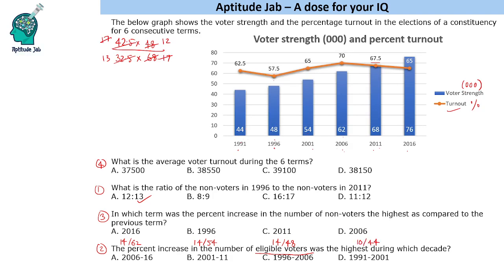This is a very simple thing to do. When the numerator is the same but denominators are different, we check for the least denominator. So 14/48 is higher than 14/54 and 14/62 — those two cannot be the answers. Now comparing 14/48 and 10/44: 10/44 is clearly more than one-fourth, while 14/48 is less than one-fourth. So 1996 to 2006 is removed too. Without doing any calculation, we answered this question just by observing the numbers.